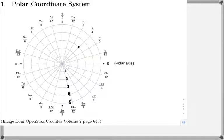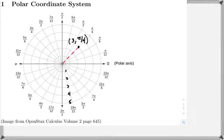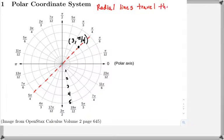Let's take a point in the polar coordinate system at an angle of pi over 4, on the third ring, so we'd call that (3, π/4) — that's one way we describe this point. We'll learn how to convert from polar coordinates into rectangular form, and vice versa. The line at pi over 4 is called a radial line. Radial lines travel through the origin, which in polar coordinates we call the pole.